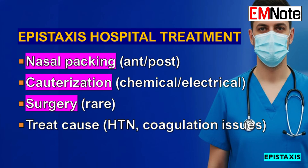They just provide direct pressure. For a confirmed posterior bleed, posterior packing is way more complex — it almost always means admission to the hospital, probably to a monitored bed. We use specialized balloon catheters that have a second, larger balloon that sits in the nasopharynx to compress the artery. There are big risks: it can compromise the airway or irritate nerves and cause a drop in heart rate and blood pressure. These patients need to be watched very closely.